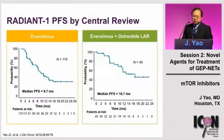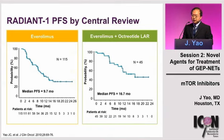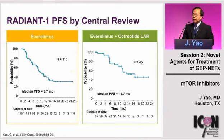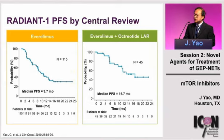With these results, Novartis began a development program called RADIAN, which thoroughly assessed everolimus in neuroendocrine tumors. RADIAN-1 took everolimus into a tougher patient population — a total of 160 patients previously treated with chemotherapy who had disease progression either during or after chemotherapy. Among these patients with refractory and progressive disease, everolimus demonstrated potential to stabilize tumors and stop tumor growth. In patients receiving everolimus alone, median progression-free survival was 9.7 months.